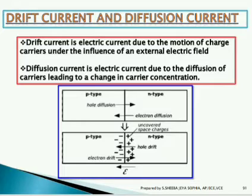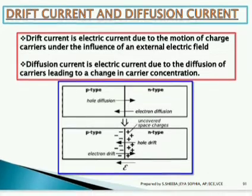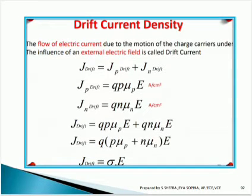What is meant by drift current density? The flow of electric current due to the motion of charge carriers under the influence of an external electric field is called drift current. Regarding this PN junction diode, the drift current is calculated for both p-type as well as n-type, as you can see in the equation.